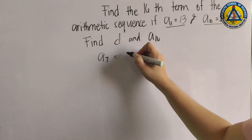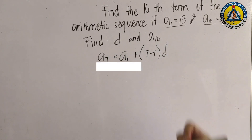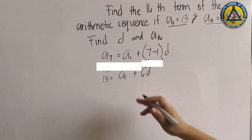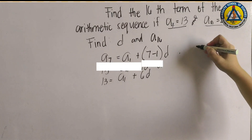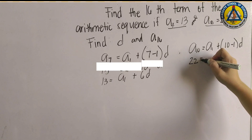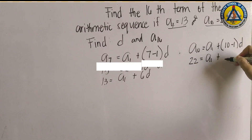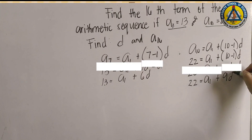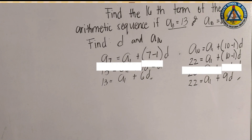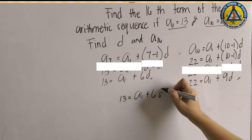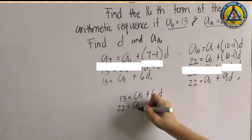Using the nth term formula: a(7) = a(1) + 6d gives us 13 = a(1) + 6d — this is equation 1. For a(10): 22 = a(1) + 9d — this is equation 2. We have two equations with the same variables, so we form a system of equations to solve for the common difference d and a(1).